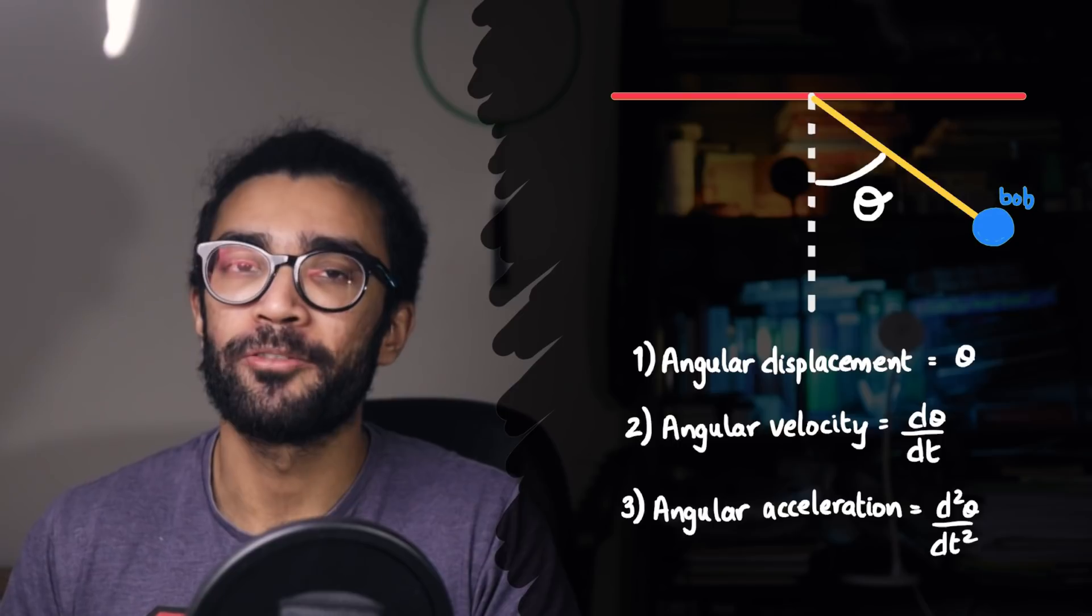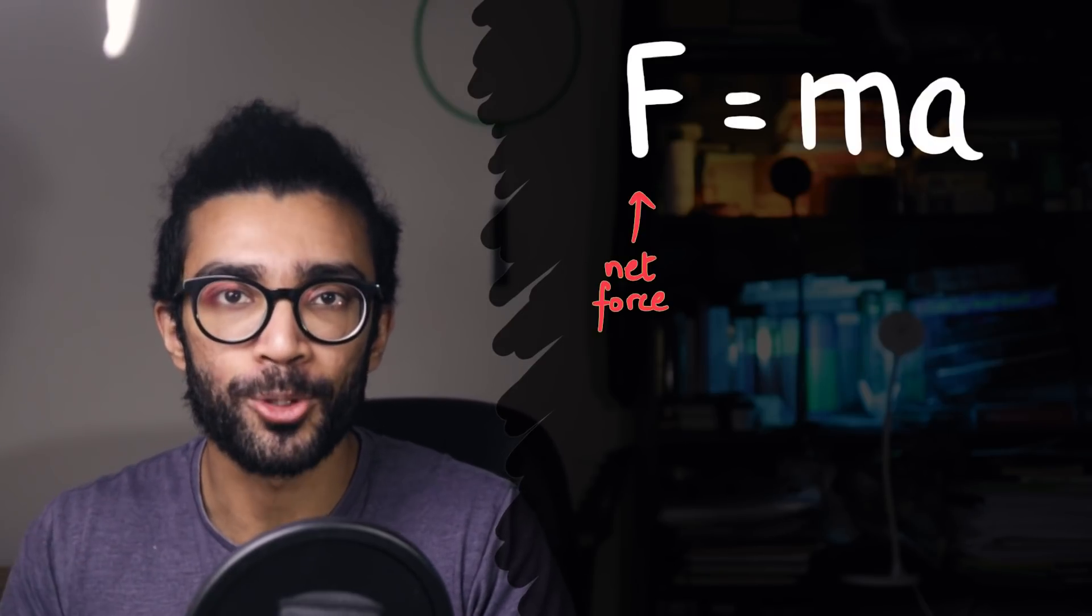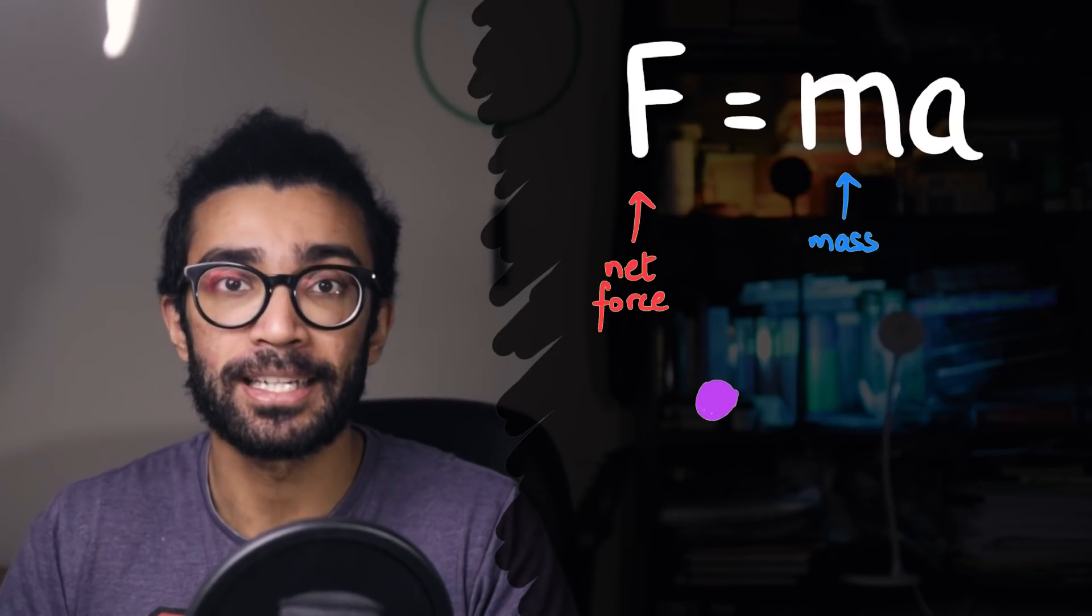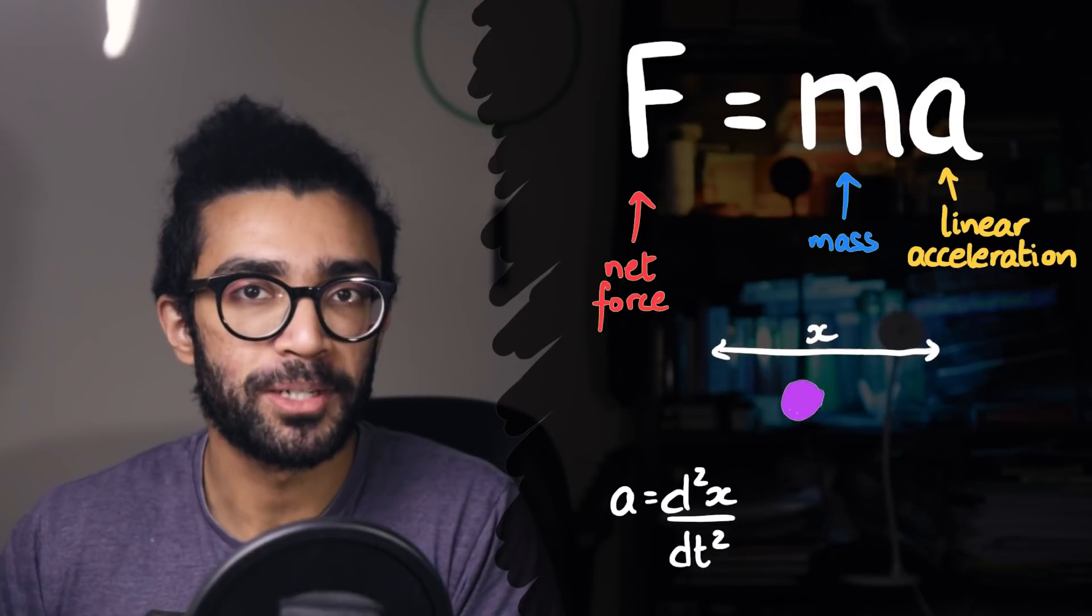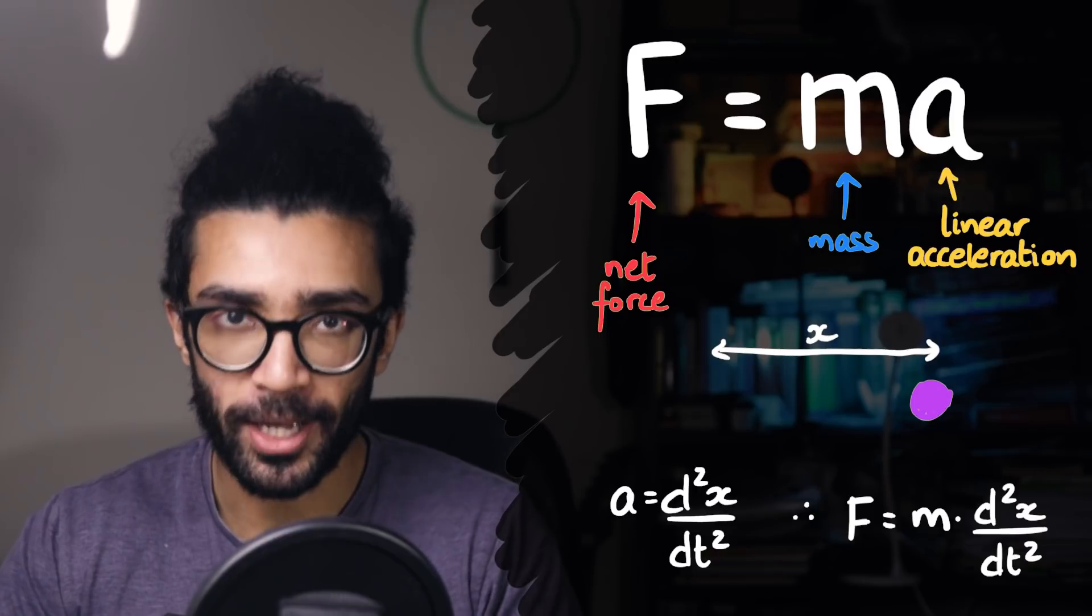But before we do, we need to look at another bit of physics very quickly. Newton's second law of motion tells us that the net force on an object, F, is equal to the mass of that object multiplied by its acceleration. Which, for an object moving in a straight line, we can simply write as m multiplied by d2x by dt squared.